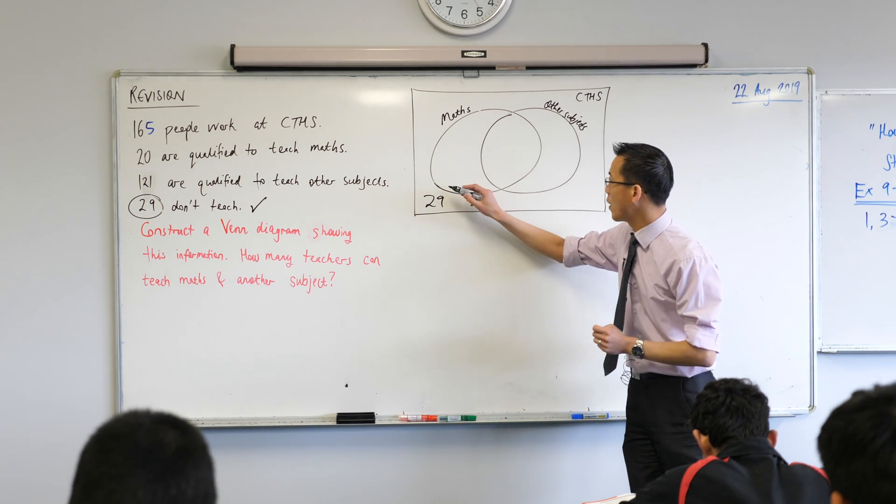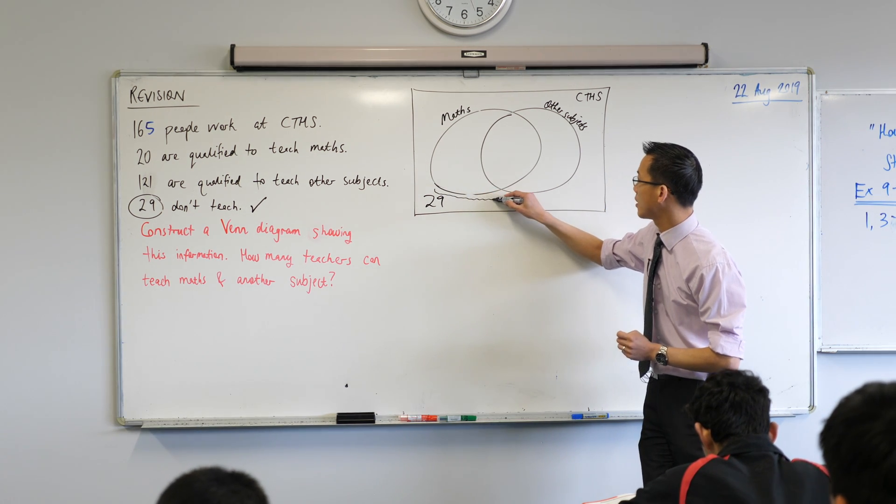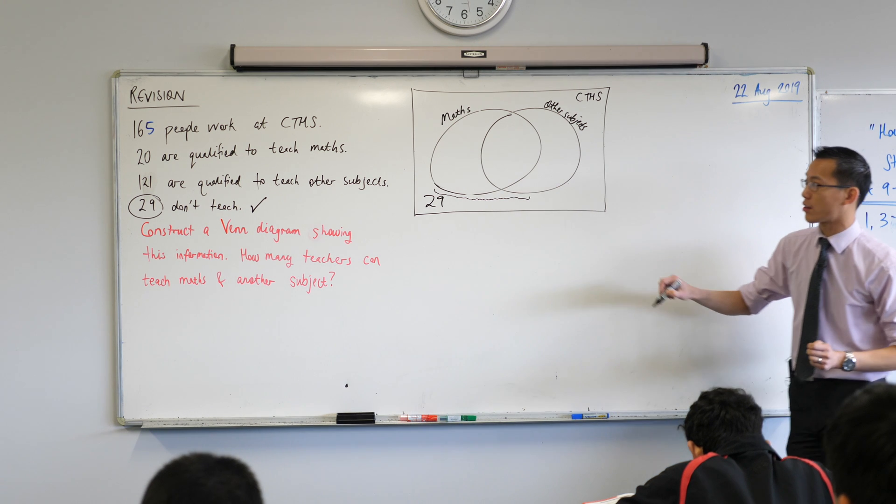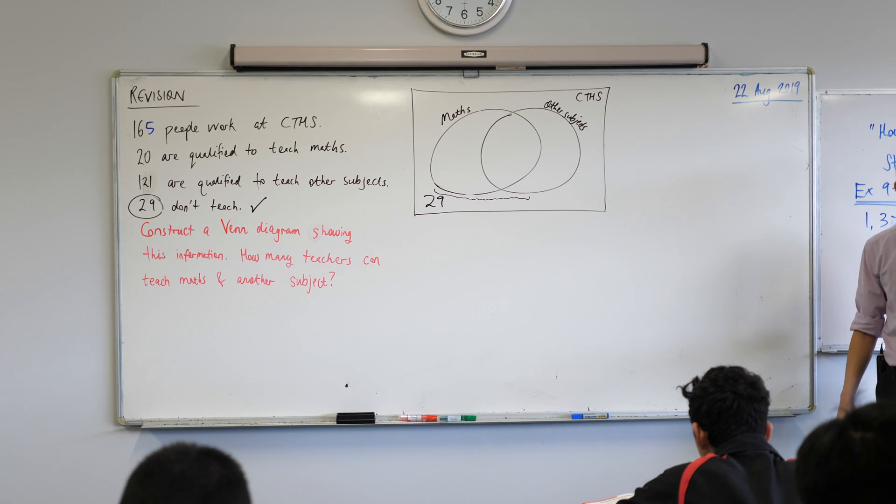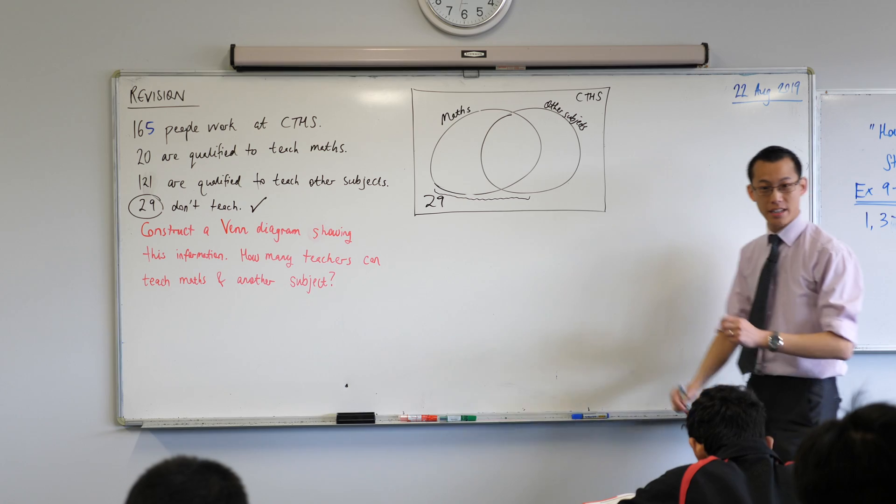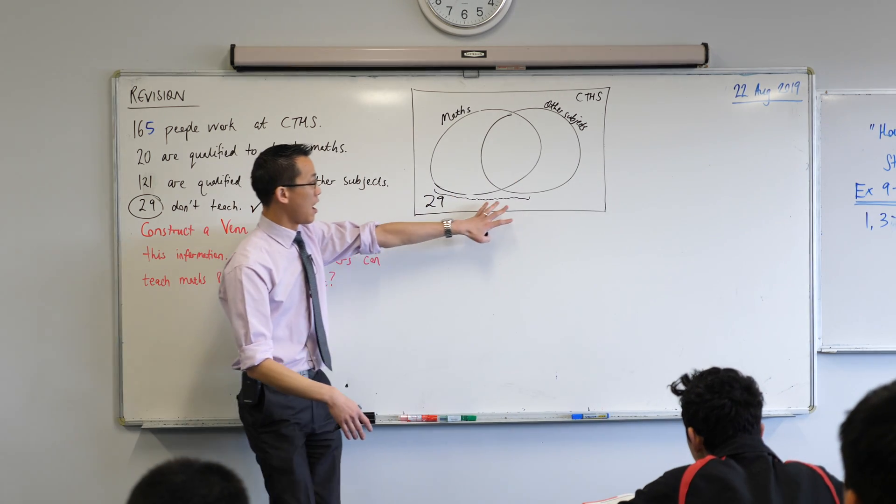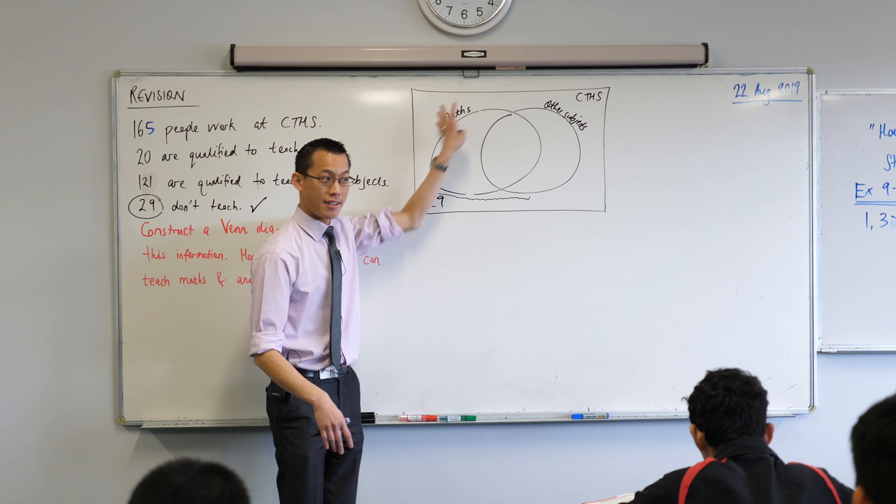Check my arithmetic. I think it is 136. Okay, so I'm going to put 136 people into here. But I know that 20 of them will be in this circle. Do you agree with that? 20 will be in that circle.